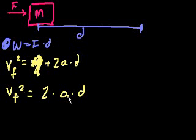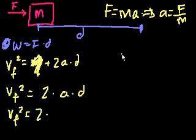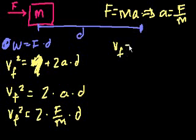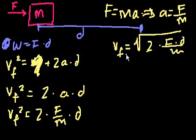And then we could rewrite the acceleration in terms of what? The force and the mass, right? So what is the acceleration? Well, F equals ma. Or acceleration is equal to force divided by mass. So we get Vf squared is equal to 2 times the force divided by the mass times the distance. And then we could take the square root of both sides if we want. And we get the final velocity of this block at this point is going to be equal to the square root of 2 times force times distance divided by mass. And so that's how we could figure it out.